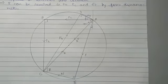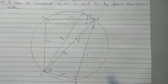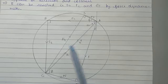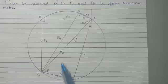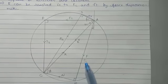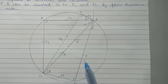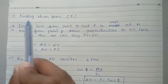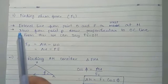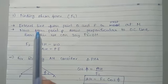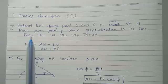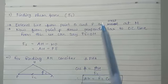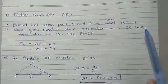Using this diagram we have to find FN, F, and mu — the coefficient of friction — and at last the resultant. First, finding shear force. These are the two steps for finding the shear force. Draw a line from point O and B to meet at the edge.